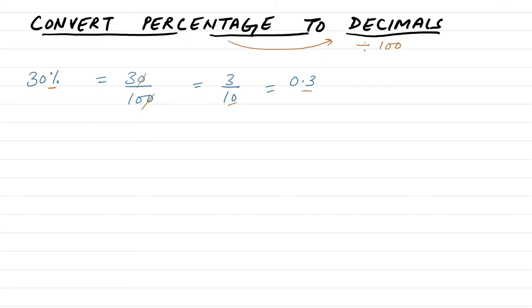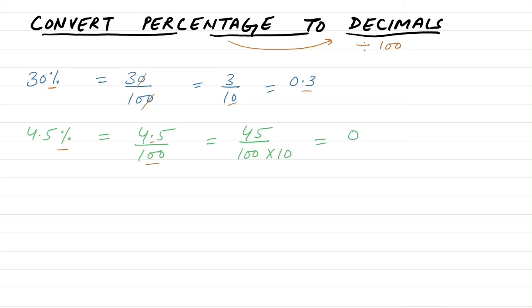Let's try 4.5 percent. This is written as 4.5 divided by 100. Since there is already a decimal, we rewrite it as 45 divided by 1000 — the extra 10 accounts for the single decimal place. This gives 0.045, because there are three zeros at the bottom, meaning three decimal places.